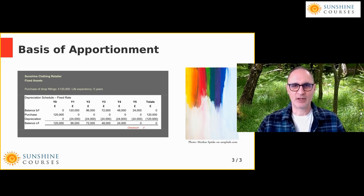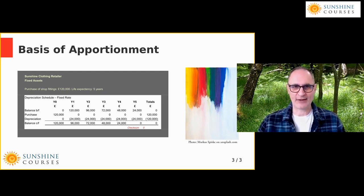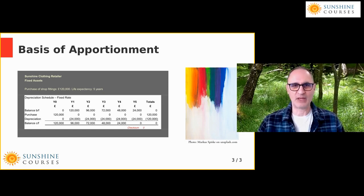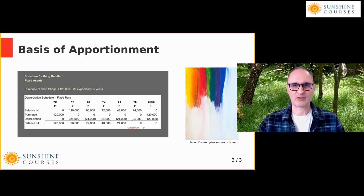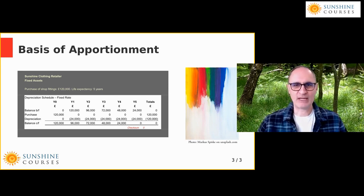This table is a typical format for managing fixed assets. In year one, we start with £120,000 — bought in year zero — then allocate depreciation of £24,000, leaving £96,000. In year two, we start with £96,000, the figure carried from year one. At the end of year five, the totals show we started with nothing, spent £120,000, deprecated the whole £120,000 over the period, and are left with nothing.